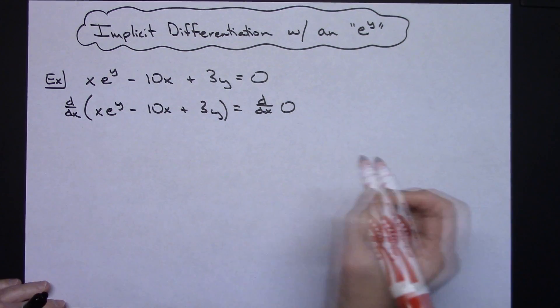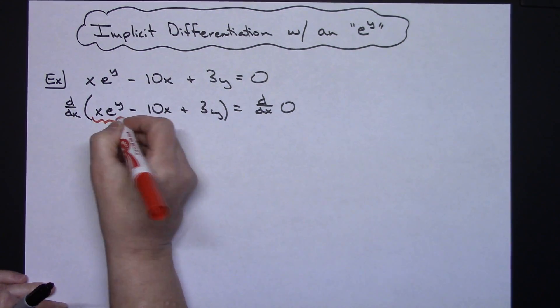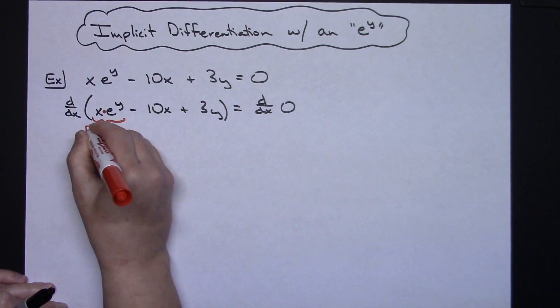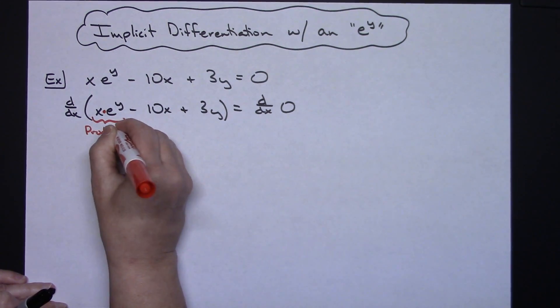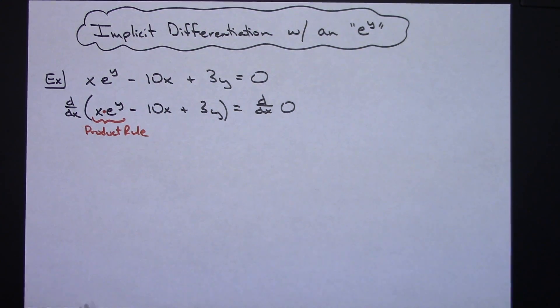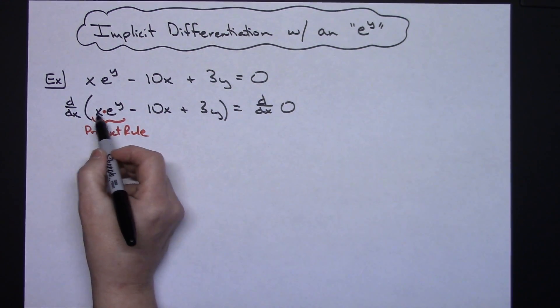Now when I go take the derivative right here, I see that there is a product going on right there. So I've got to use product rule, and there is that e to the y that's sitting there. So product rule.